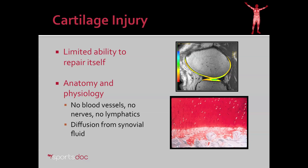The difficulty in treating cartilage comes from the fact that cartilage has a limited ability to repair itself. Unlike muscle, tendon, or bone in the body, which have an enormous ability to repair themselves, cartilage can't do that. The reason is because cartilage doesn't have blood vessels, nerves, or lymphatics like other tissues in the body. In this microscopic picture, the red area is cartilage, and below that is bone. You can see in the bone there are blood vessels and passages for healing cells to work through. Cartilage doesn't have that, and therefore relies on diffusion from joint fluid or synovial fluid for its nourishment. That's a very slow process, so if you have an injury in the cartilage, it will be very difficult, if possible at all, for it to repair itself.